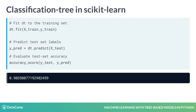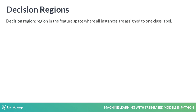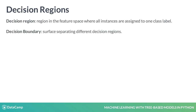To understand the tree's predictions more concretely, let's see how it classifies instances in the feature space. A classification model divides the feature space into regions where all instances in one region are assigned to only one class label. These regions are known as decision regions. Decision regions are separated by surfaces called decision boundaries.